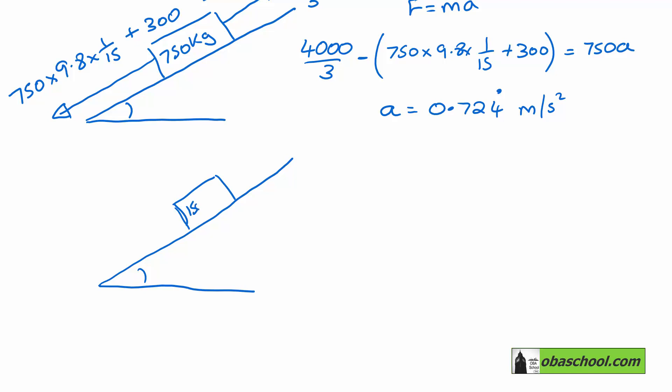So we know that that's 150 kilograms. And the force pulling it this way is what we're after, the tension in the tow bar. The acceleration now, of course, is the same. So 0.724 recurring.